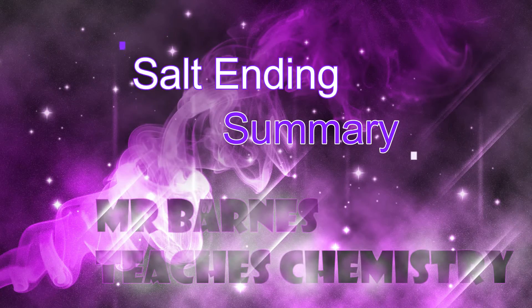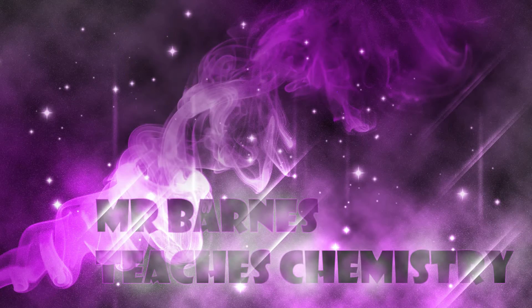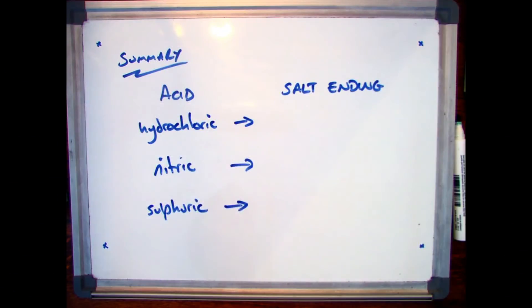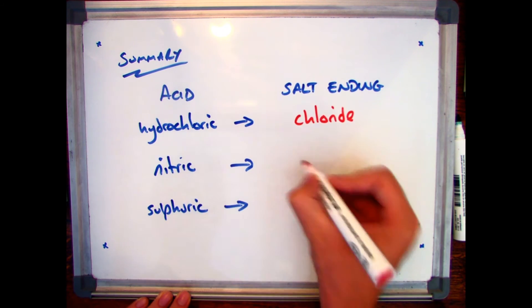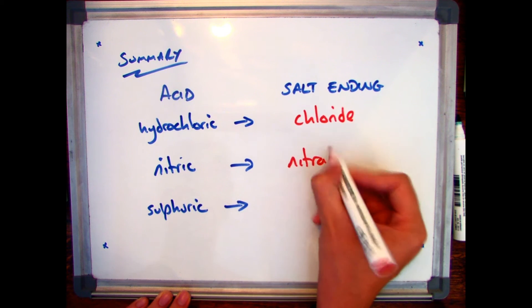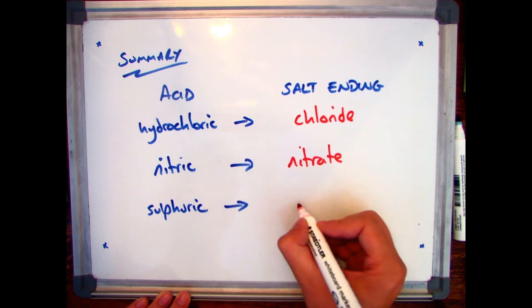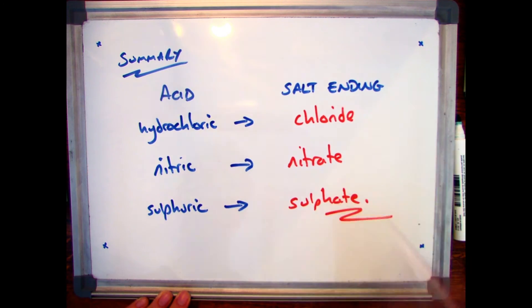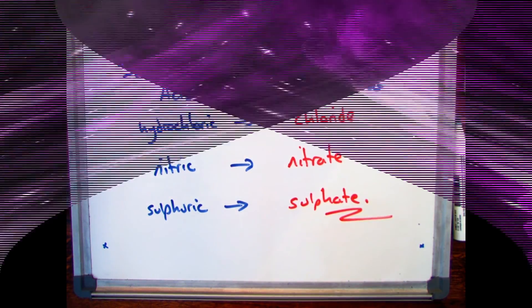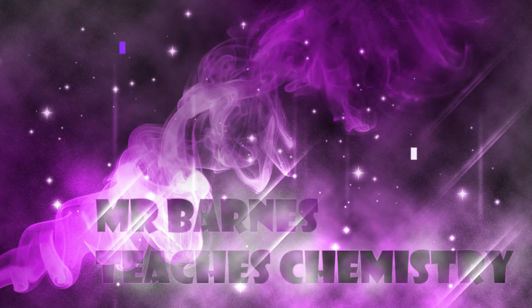Let's do a quick summary of our salt endings. If you have hydrochloric acid, you will always have a chloride. Nitric acid gives you a nitrate, and sulfuric acid gives you a sulfate. Really important to remember that — this will come up time and time again.